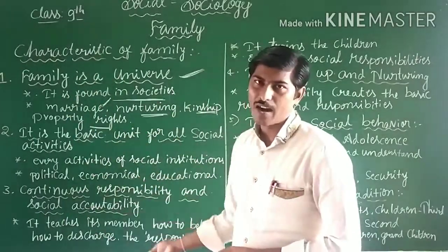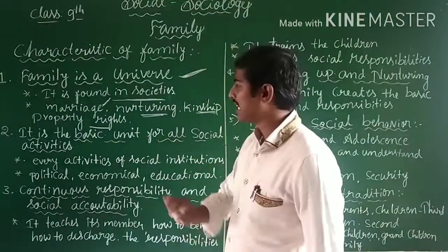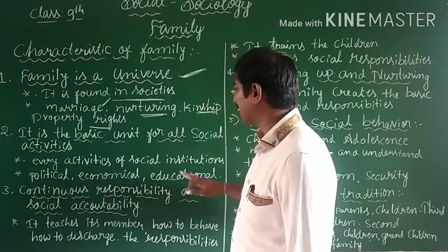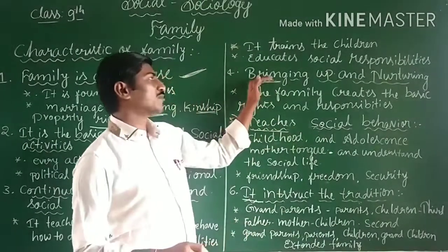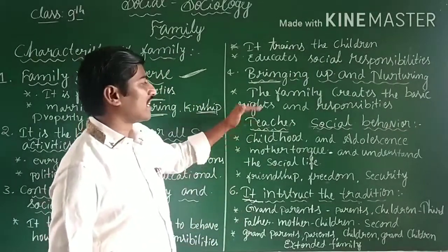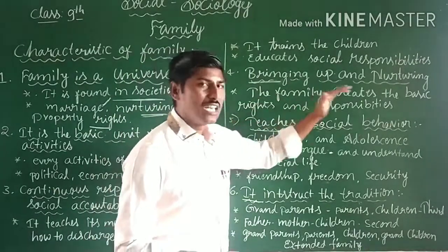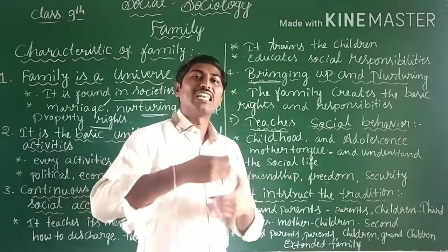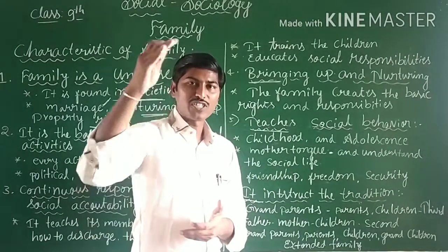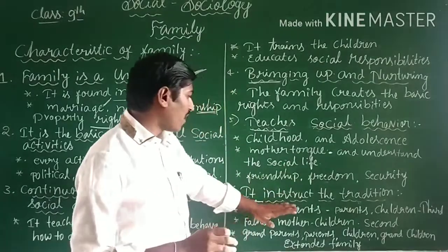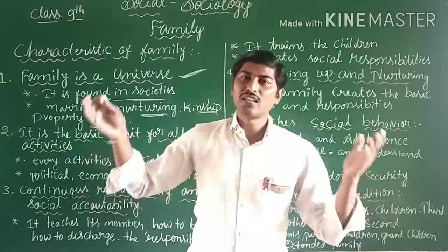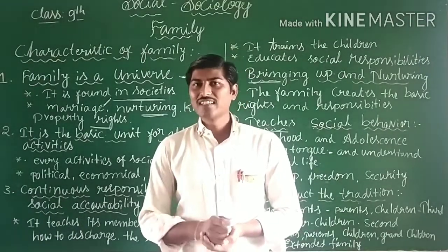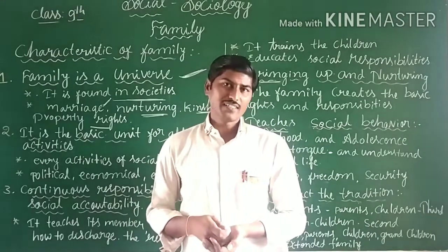To summarize the characteristics of family: first, family is universal; second, it is the basic unit for all social activities; third, it has continuous responsibility and social accountability; fourth, it is responsible for bringing up and nourishing children; fifth, the family teaches social behavior; and sixth, it instructs tradition — culture is passed from one generation to another. In the next class we will meet with the types of family. Thank you.